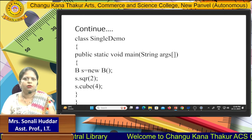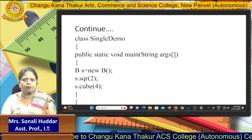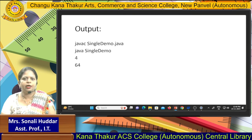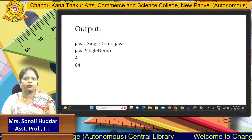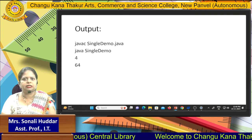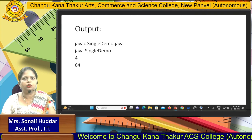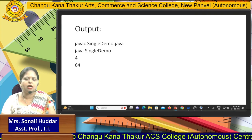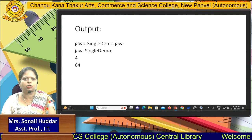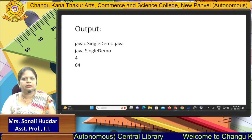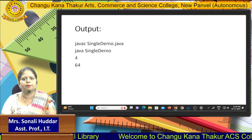Now closing the main method and closing the main class SingleDemo. To execute, I use the Java compiler: javac SingleDemo.java. After compilation I execute it with: java SingleDemo. The output shows 4, which is the square of 2, and 64, which is the cube of 4. This is the example of single inheritance.